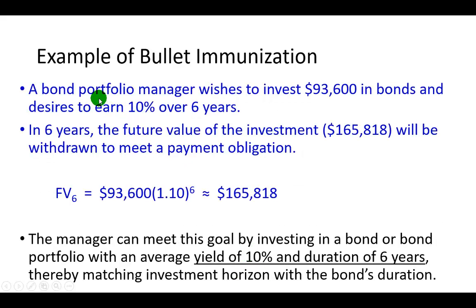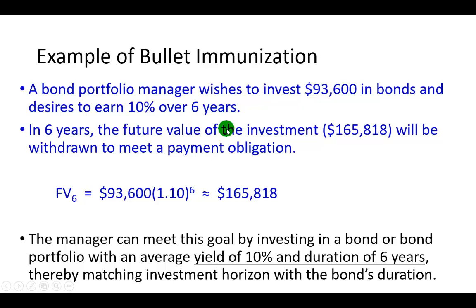As an example, let's say a bond portfolio manager wishes to invest $93,600 in bonds and desires to earn 10% over a six-year period. The future value of this investment is going to come out to be approximately $165,818 — the amount needed to cover a payment obligation six years from now. The manager can meet this goal by investing in a bond or bond portfolio with an average yield to maturity of 10% and a duration of six years, thereby matching the chosen investment horizon of six years with the bond's duration.